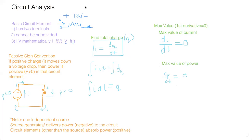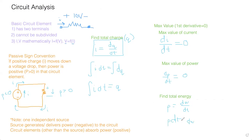To find total energy: energy is in joules, and work is energy. Since power equals dw/dt, multiply both sides by dt to get p·dt = dw. Taking the integral of both sides gives w equals the integral of p·dt. The bounds depend on the specific problem.